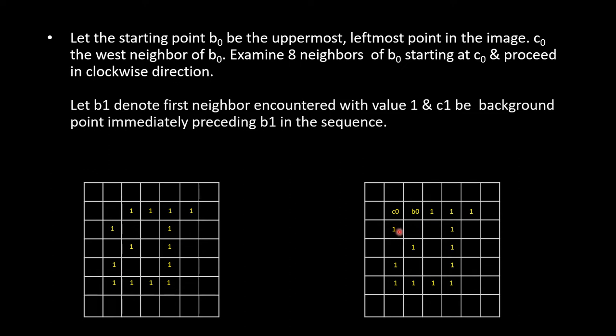B1 denotes the first neighbor encountered with value 1, and C1 is the background point immediately preceding B1 in the sequence. So the first one where we get the value 1 is denoted as B1. Let us see this in the next slide.